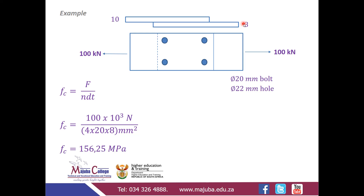For T, we use 8 mm — the smallest of the two thicknesses — because the smaller area means greater stress, so this is the member that will fail first. Substituting these values gives a compression stress of 156.25 MPa.